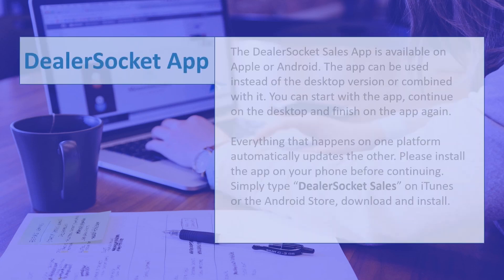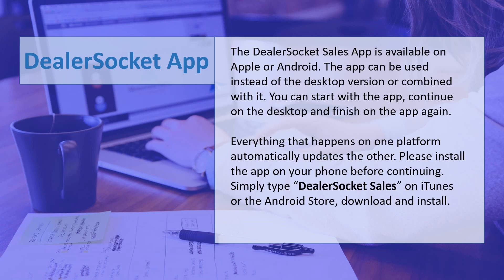The DealerSocket Sales app is available on Apple or Android. The app can be used instead of the desktop version or combined with it. You can start with the app, continue on the desktop, and finish on the app again. Everything that happens on one platform automatically updates the other. Please install the app on your phone before continuing — simply type 'DealerSocket Sales' on iTunes or the Android store, then download and install.